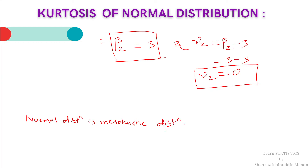In this lecture we learned the skewness and kurtosis of normal distribution, and we calculated the values of the coefficient of kurtosis and the coefficient of skewness. We observed that a normal distribution is a symmetric distribution and it has a mesokurtic property of its frequency curve. In the previous lecture we have already covered other concepts of normal distribution.